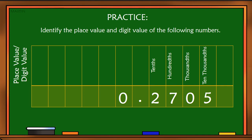Let's move on to digit values. Two is equal to 2 over 10, or 0.2. Seven is equal to 7 over 100, or 0.07. Zero is equal to 0. And five is equal to 5 over 10,000, or 0.0005.